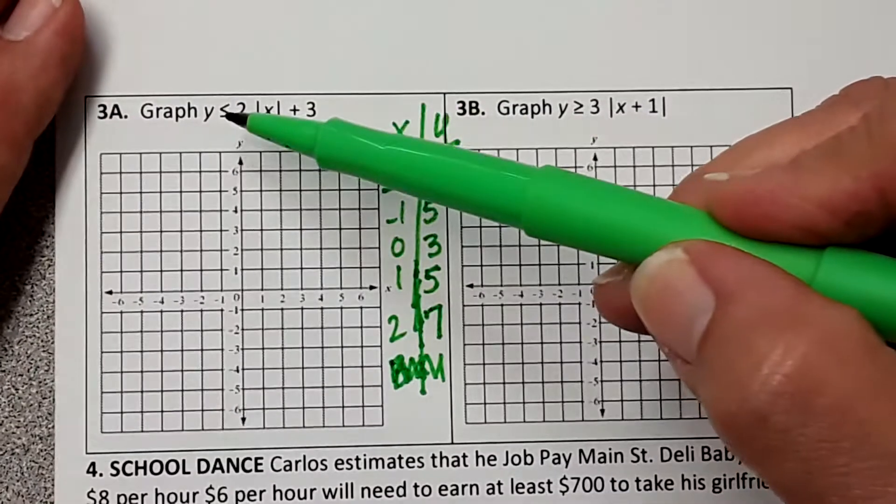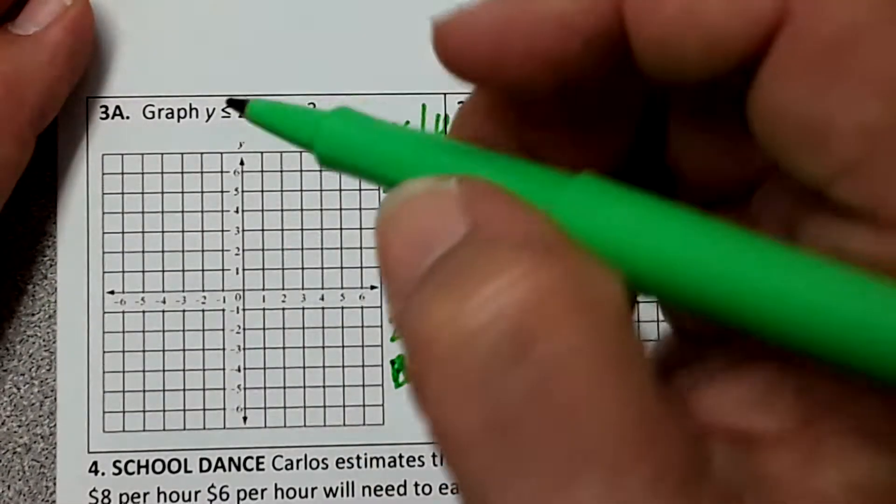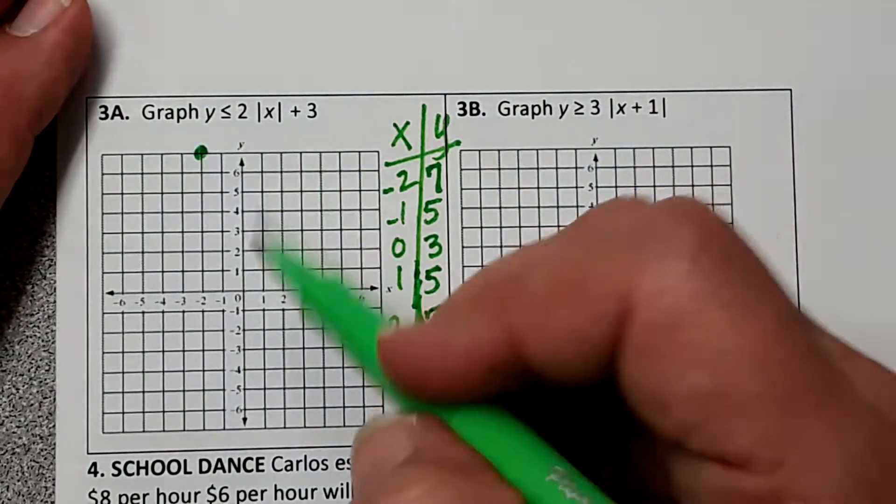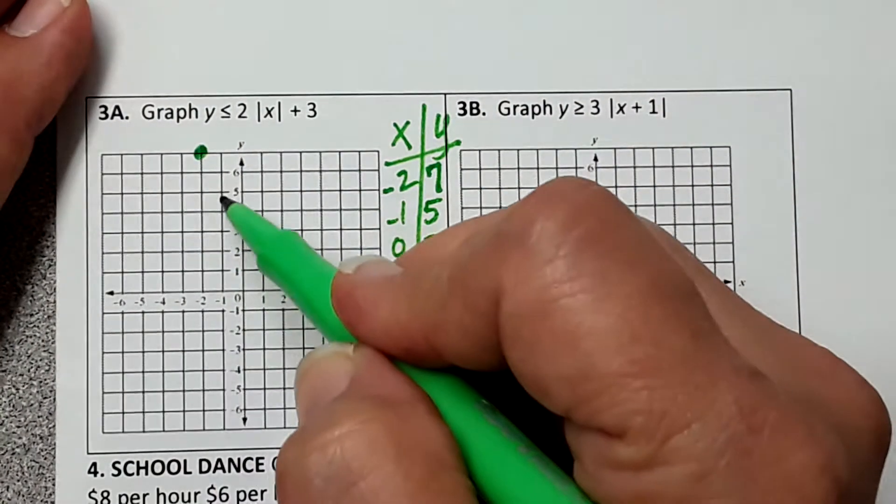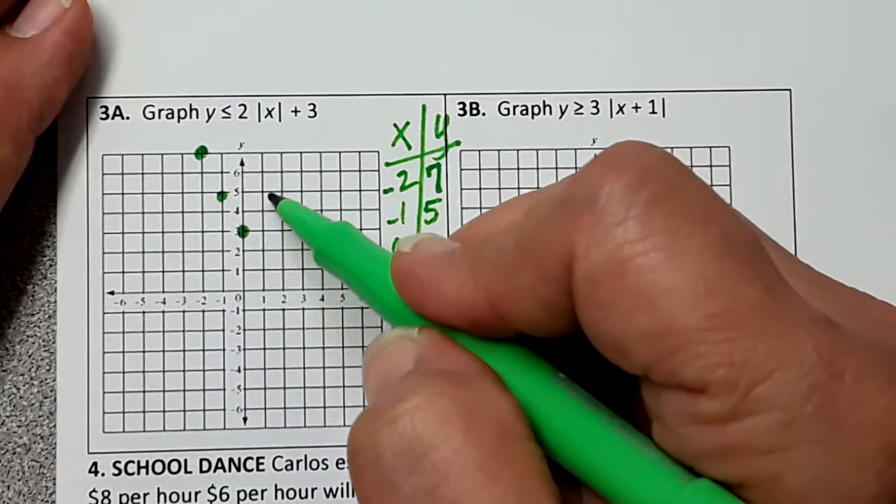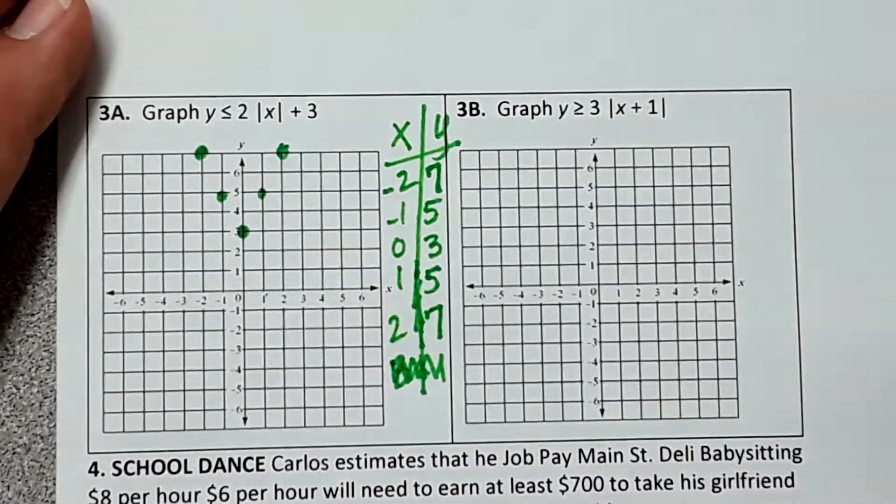And you guys, it's going to be a solid line because there's an equal to. So negative 2, 7, negative 1, 5, 0, 3, 1, 5, 2, 7. See those mirror images, you guys?